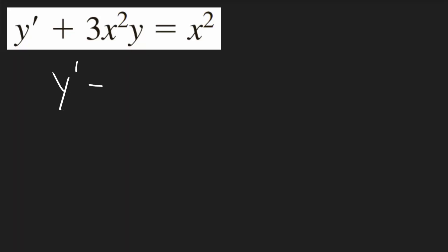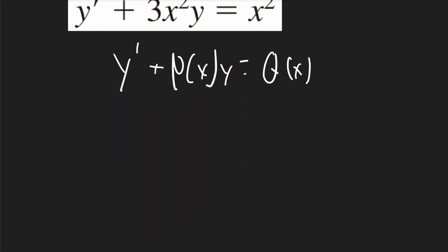Problem is already in the correct form of y prime plus p of x times y is equal to q of x. So I just need to find mu.